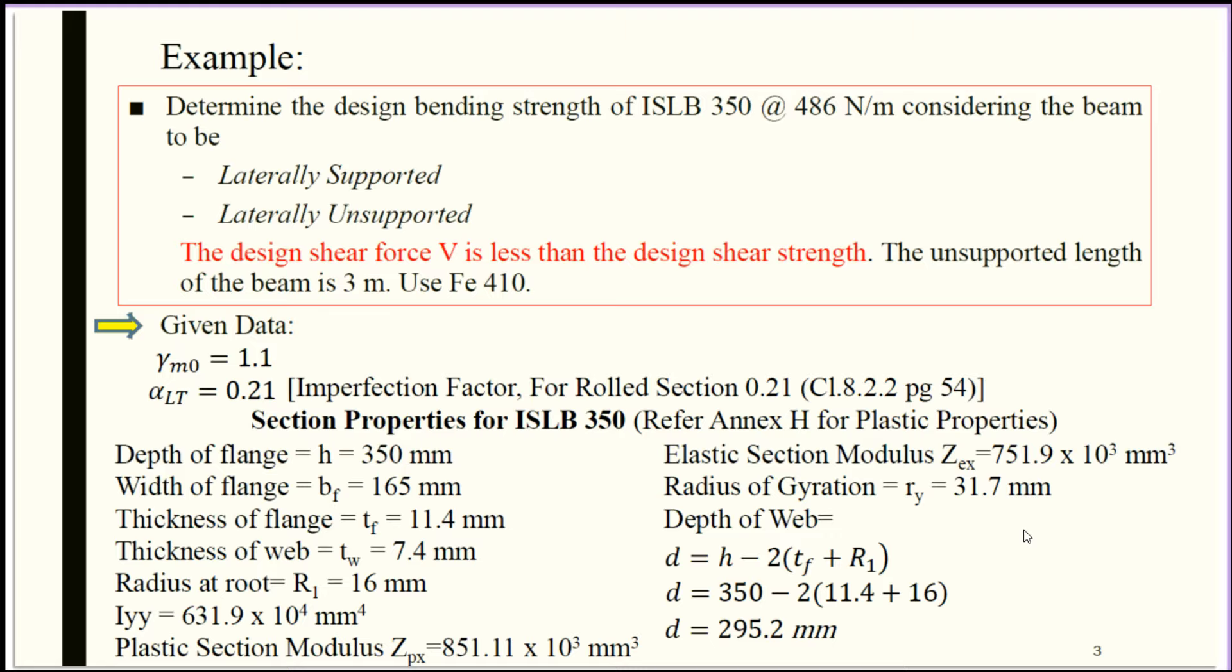Radius of gyration RY = 31.7 mm. When we are interested to calculate actual depth of web, the formula is D = H - 2(TF + R1). D = 350 - 2(11.4 + 16) = 295.2 mm.